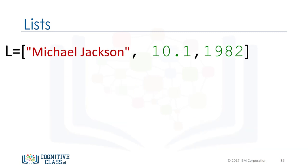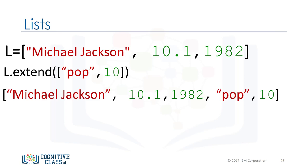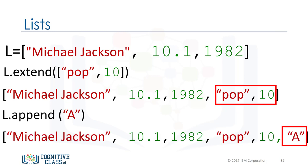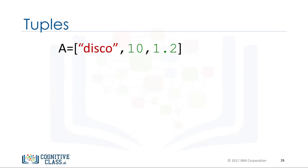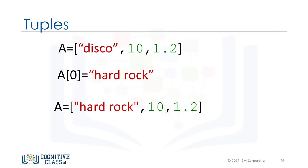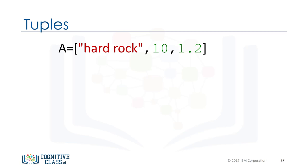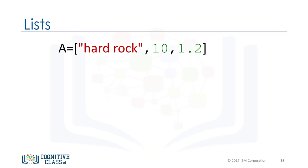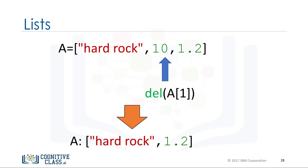Every time we apply a method, the list changes. If we apply extend, we add two new elements to the list. If we append the string A, we further change the list. As lists are mutable, we can change the first element directly — the list now becomes hard rock, 10, 1.2. We can delete an element of a list using the del command, simply indicating the list item we would like to remove as an argument.